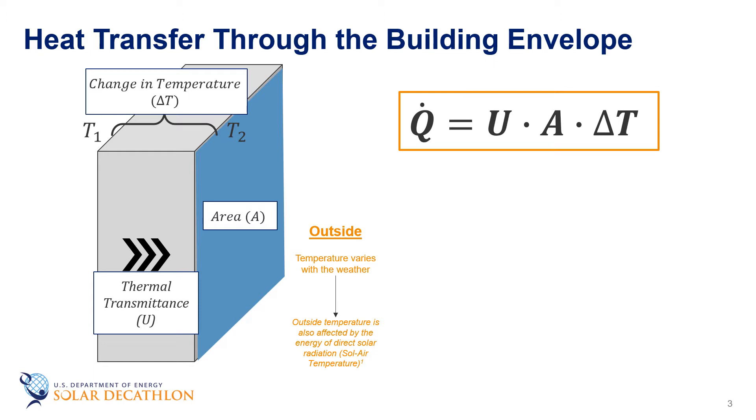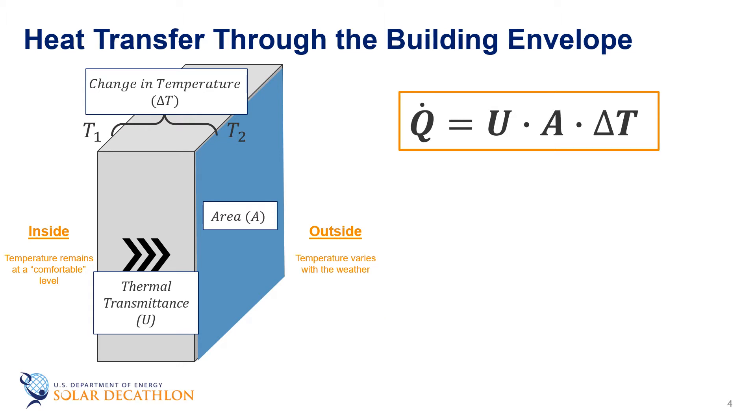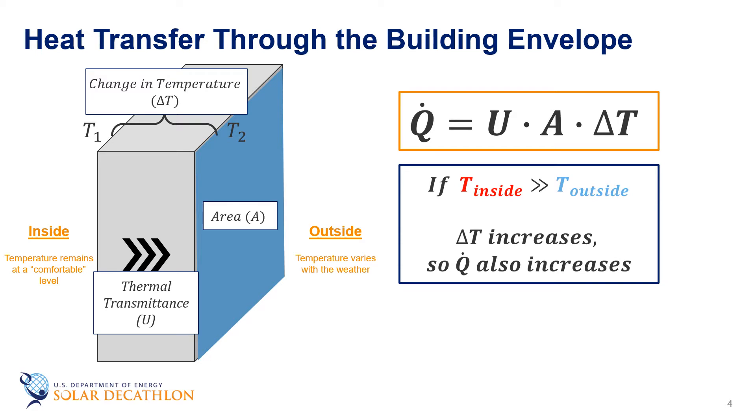The inside temperature is something comfortable and pretty steady and doesn't change much. If the outside temperature is the same as the inside temperature then the amount of heat transfer through the wall is zero. If it's really cold outside then the rate of heat transfer through the wall increases.